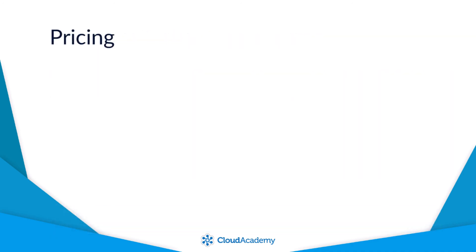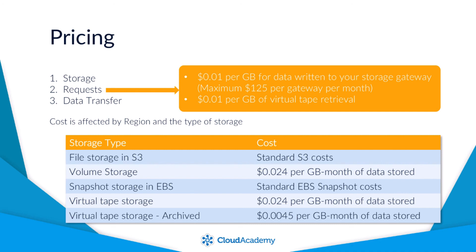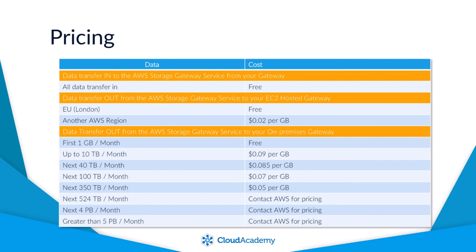AWS Storage Gateway costs are defined by three different cost points: storage, requests, and data transfer. Storage pricing depends on the region and also on the type of gateway used. With request pricing, you are charged one cent per gigabyte for data written to your storage gateway, with a maximum cost of $125 per gateway per month. You are also charged one cent per gigabyte of virtual tape retrieval. Inbound data transfer is free; however, there are costs for data transfer out to another gateway in a different region and for the amount of data transferred back to your on-premises gateway.